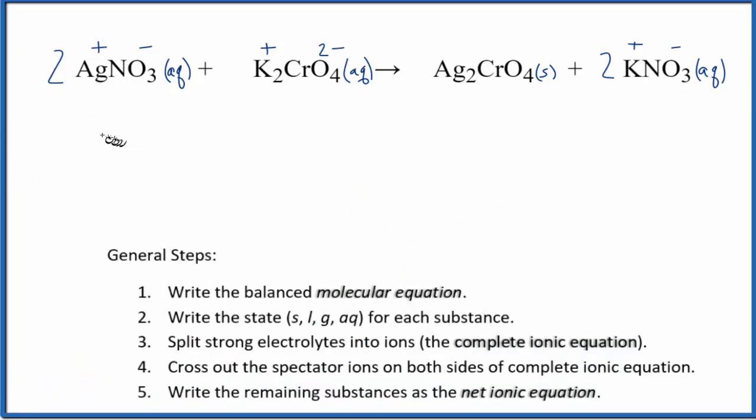So let's split them up. We have silver, Ag+, and we have two of those. And I'm not going to write aqueous after each one. We'll do that at the end. Plus we have the nitrate ion. That's NO3-. This 2 applies to all of this. So we have two of those.